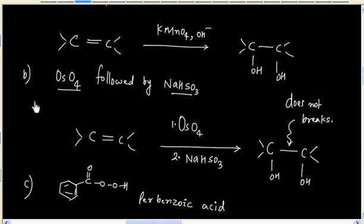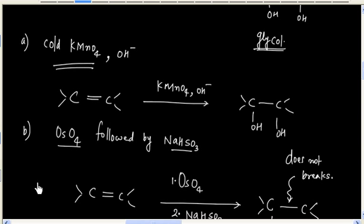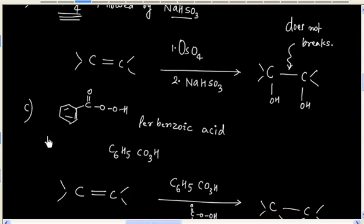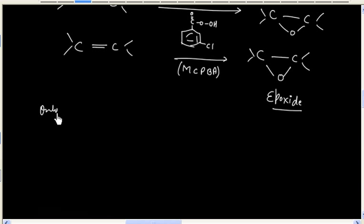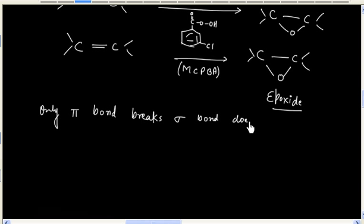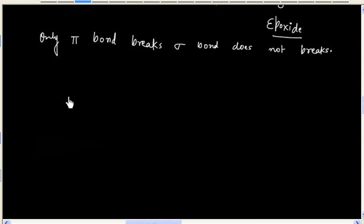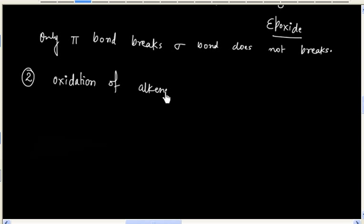So we have three reactions where only the pi bond breaks and the sigma bond does not break: cold KMnO4, osmium tetraoxide, and perbenzoic acid. Now, another kind of oxidation is oxidation of alkene with cleavage of the sigma bond.